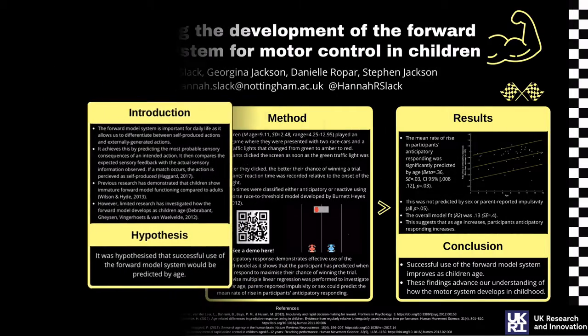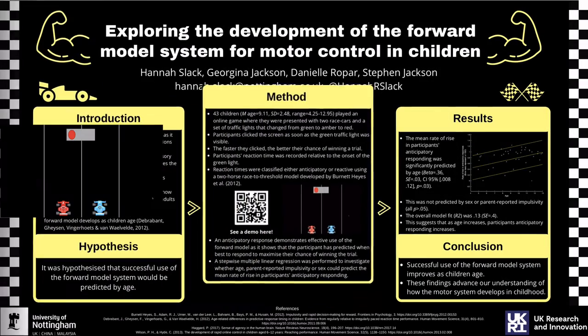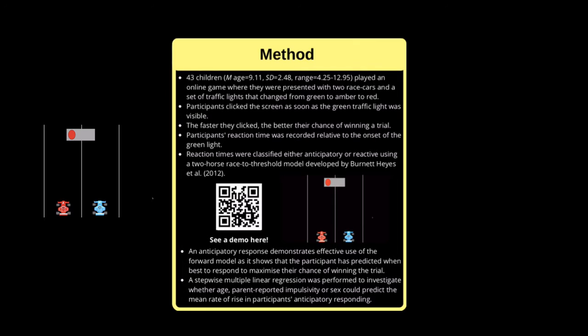Moving on to the methods. In our experiment, 43 children played an online game where they were presented with two race cars and a set of traffic lights that changed from green to amber to red. Participants clicked the screen as soon as the green traffic light was visible. The faster they clicked, the better their chance of winning a trial.